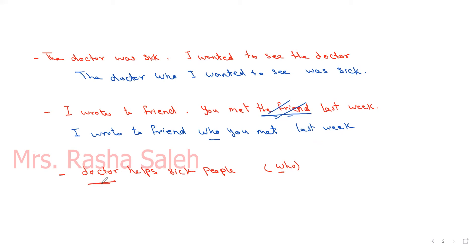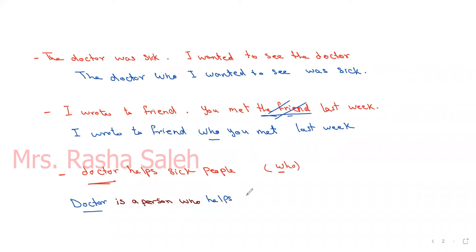Here we write the noun — the doctor or the person we're talking about — and add the phrase 'is a person who', then complete the definition. For example: 'A doctor is a person who...' and you complete it with what they do.